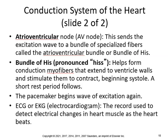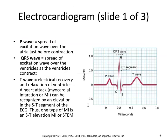An EKG, or electrocardiogram, is the record used to detect electrical changes in the heart muscle as it beats. The P wave represents the spread of excitation over the atria before contraction; the QRS wave represents excitation over the ventricles as they contract; and the T wave is the electrical recovery and relaxation of the ventricles. A heart attack (myocardial infarction) can be recognized by elevation of the ST segment — this is called an ST-elevation MI.